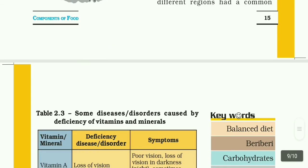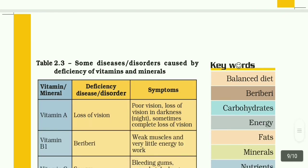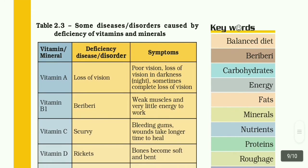Table 2.3: Some diseases or disorders caused by deficiency of vitamins and minerals. Vitamin A deficiency disease: loss of vision. Symptoms: poor vision, loss of vision in darkness — night blindness — and sometimes complete loss of vision.